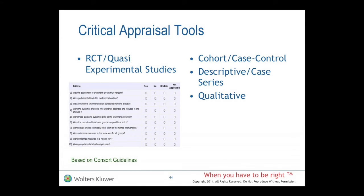They have different critical appraisal tools based on the research design, which is contextual and that's good. The RCT and quasi-experimental studies appraisal tool, for instance, is based off of the CONSORT guidelines — the internationally recognized reporting guidelines for RCTs. All of their critical appraisal tools are based off of international reporting guidelines. For qualitative research, however, because qualitative researchers haven't agreed on international reporting guidelines, that tool was designed by JBI staff and experts based upon best practices around appraising qualitative research.